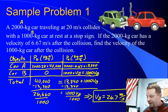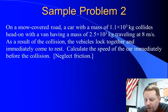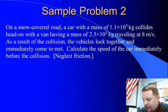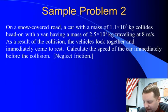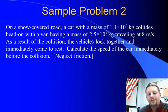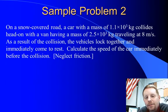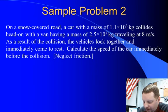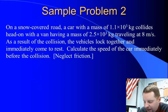Let's take another example. On a snow-covered road, a car with a mass of 1.1 times 10 to the third kilograms collides head-on with a van having a mass of 2.5 times 10 to the third kilograms traveling at 8 meters per second. Since they're colliding head-on, they're going in opposite directions, so one velocity must be negative with respect to the other. As a result of the collision, the vehicles lock together and immediately come to rest. Calculate the speed of the car immediately before the collision.